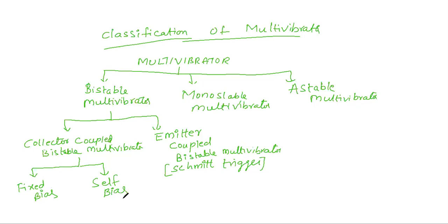This is the basic classification of multivibrators. The multivibrators are classified into three types: bistable, monostable, and astable. Bistable is again classified into two types — collector coupled and emitter coupled. Collector coupled is classified into two types: fixed bias and self-bias. We will discuss all these topics in detail in the coming sessions.